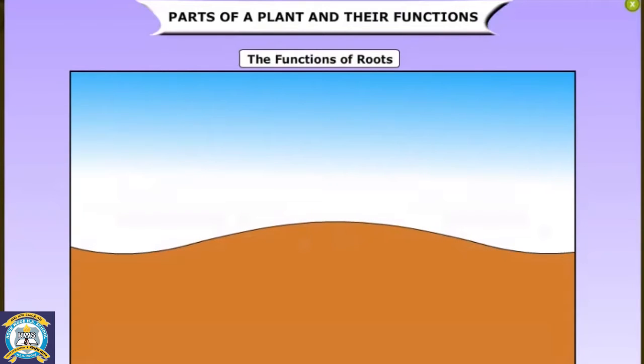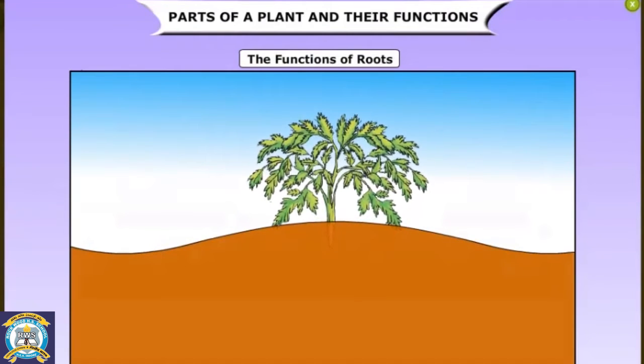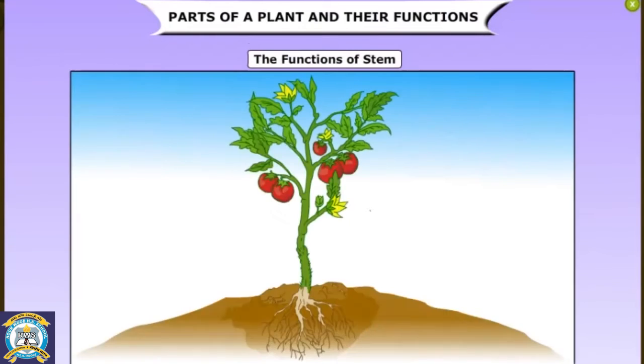The roots of a plant grow under the ground and hold the plant firmly in the soil. Big trees have thick, long roots. Roots can absorb water and mineral salts from the soil and pass them on to the stem. Plants in dry areas develop long roots that go deep down in search of water. Some plants, such as carrot, beetroot, and radish, store extra food in the roots.